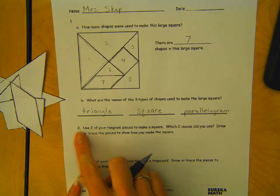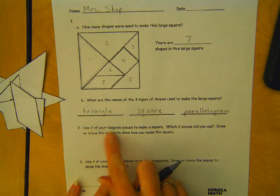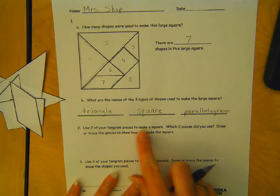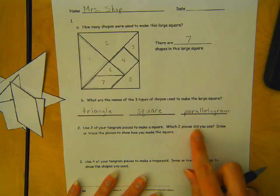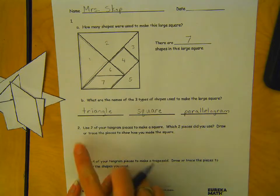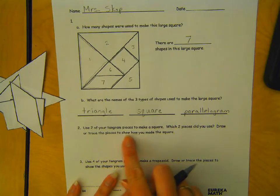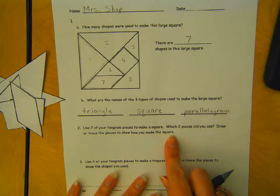Alright, number 2. Use two of your tangram pieces to make a square. Which two pieces did you use? Draw or trace the pieces to show how you made the square. Okay.